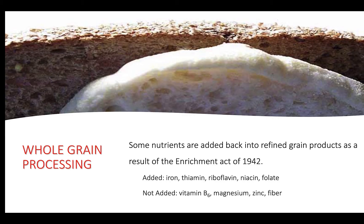Some nutrients are added back to refined grain products. In 1942, after deficiencies of these nutrients were beginning to be noticed — because folks were eating refined flour with all these nutrients removed — the government passed the Enrichment Act of 1942, which required flour to have B vitamins and iron added back in, as those were the deficiencies being seen in the population. However, not all nutrients were returned to the flour, including B6, magnesium, zinc, and fiber.